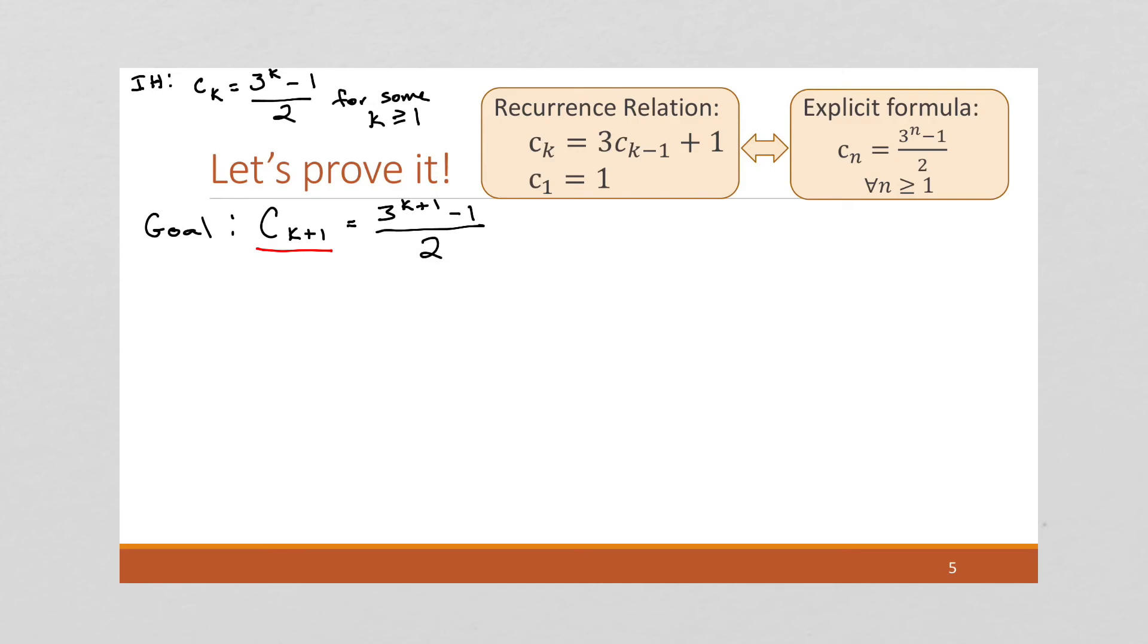And I'm going to say c to the k plus 1. And I'm going to make use of the fact that our recurrence relation is a given. We know our recurrence relation works, is correct, is usable. So I'm going to just use that with my c of k plus 1. So what is my recurrence relation for c of k plus 1? Well, it's 3 times the previous value. So in this case, this would be 3c of k plus 1. And so that is by the recurrence relation.